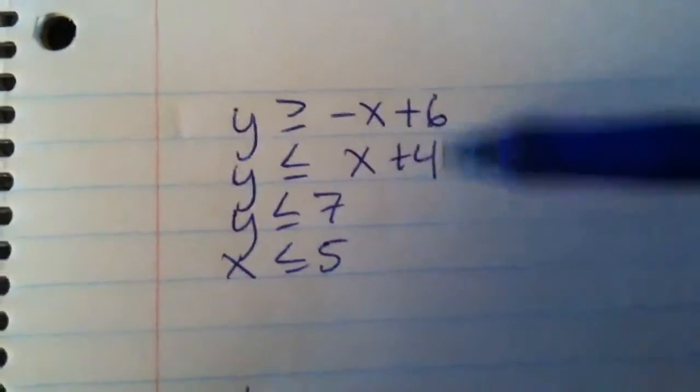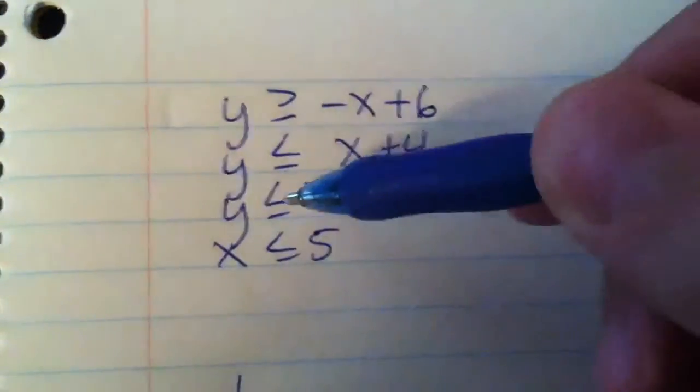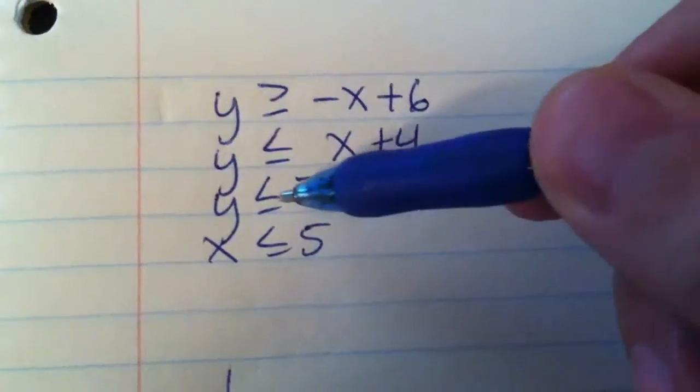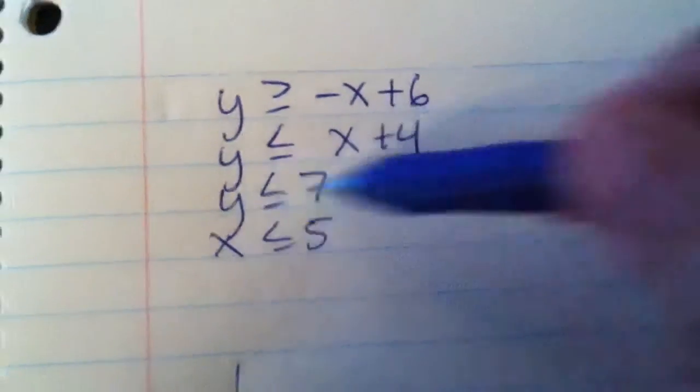Okay, so we have our equation set here. The ones on the bottom, or the ones with just one letter, are always going to be the easier ones. Ones with only a Y, so like this one, it only has a Y. Those are horizontal lines straight across, so we just graph that.